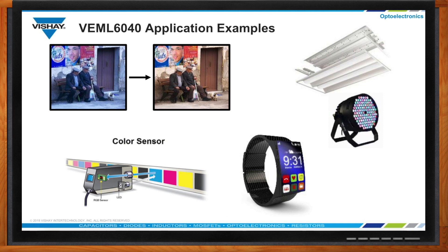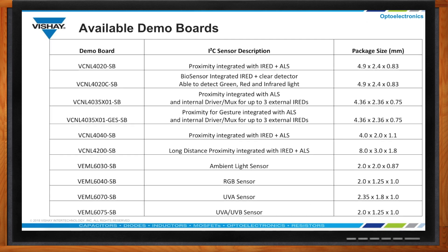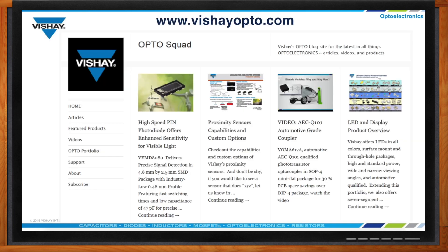With every digital sensor we bring to market, we offer a demo board. Here's a list of what we offer at the moment, which will expand with each new sensor we release. The typical way to go about this is to get the board, have the sensor explorer — which you don't need to rebuy every time, as it's compatible with every board — get an application note to understand what the software module is telling you, and then start designing. A great place for more information is vishayopto.com, a blog site where we post information about different applications of our sensors and other optoelectronic products, telling the story of what these sensors do. You can also register to the site to get up-to-date information on new posts.